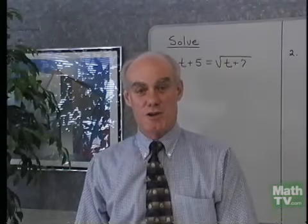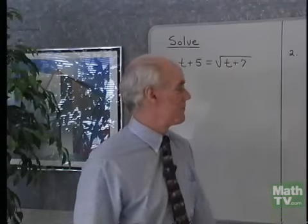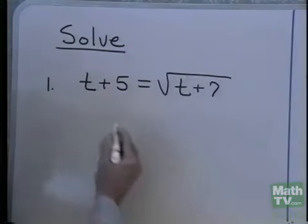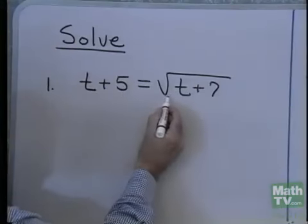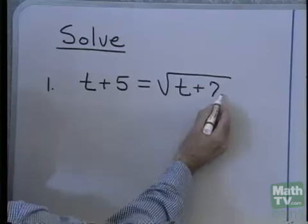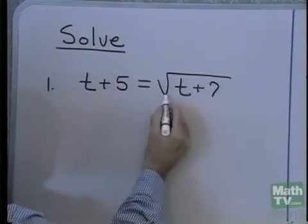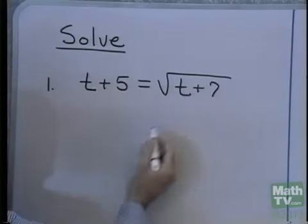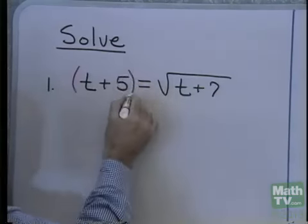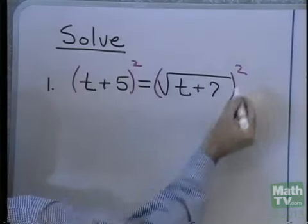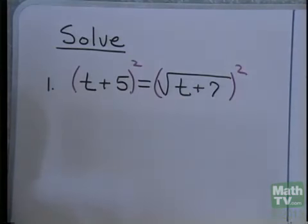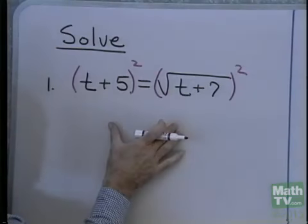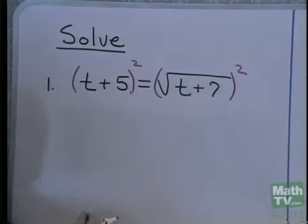Now, we want to turn our attention to solving equations that involve radicals. I've written solve, and I have t plus 5 equals square root of t plus 7. What keeps me from being able to solve this by my normal methods is having the square root on the right side. To get rid of the square root, I'm going to square both sides of the equation. When I do that, I have to be careful because that sometimes introduces extraneous solutions — solutions that are not really solutions to my original equation. But we'll see about that in a second.